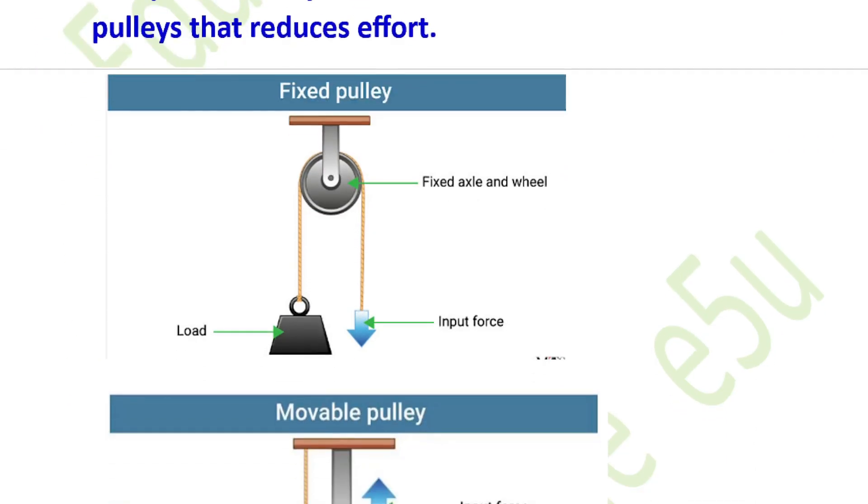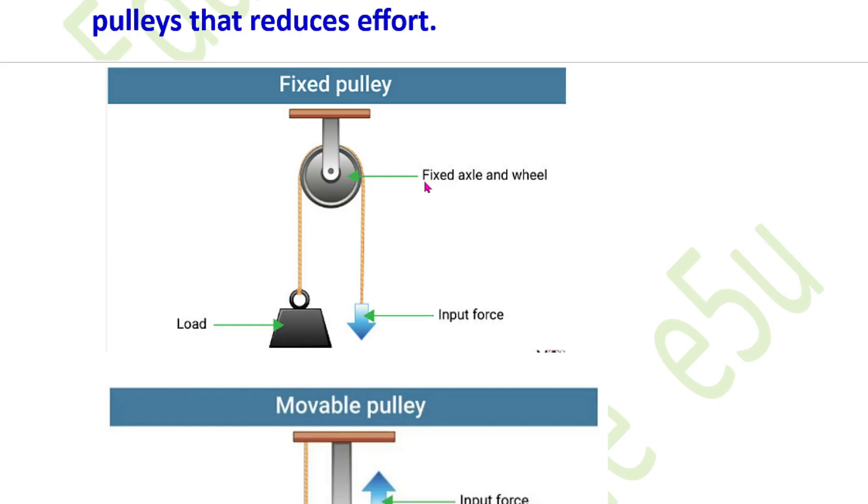A compound pulley is a combination of fixed and movable pulleys, used to reduce the effort required to lift a load.